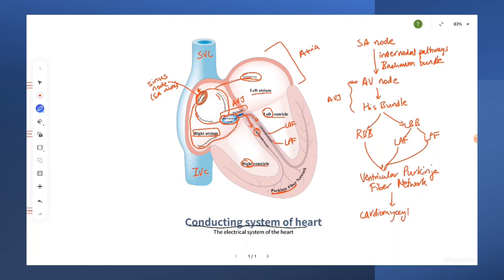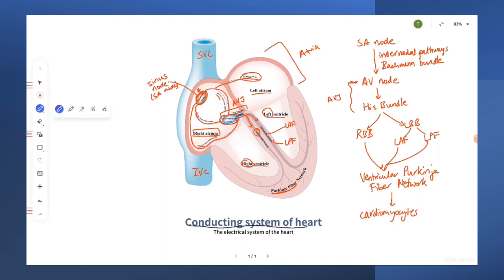That's how the electrical flow occurs in a normal healthy sinus rhythm. Let's highlight some of the key aspects: remember the sinus node, the AV node, the His bundle, the right bundle branch, the left bundle branch with its fascicles, to the Purkinje network in the ventricles, and then to the individual cardiomyocytes. Go over that pathway and notice where everything is located, because knowing the anatomy will be super important as we move forward in additional lessons.